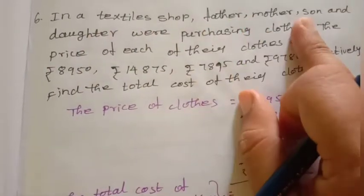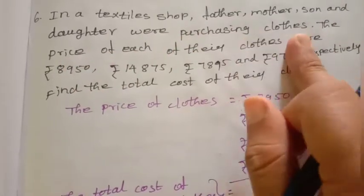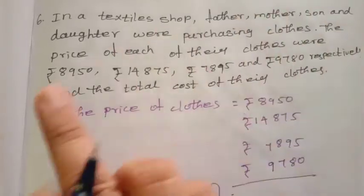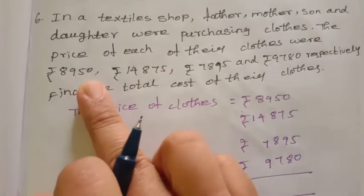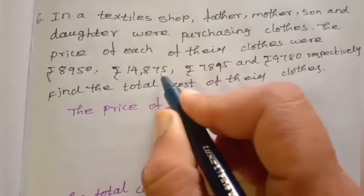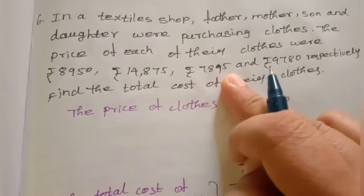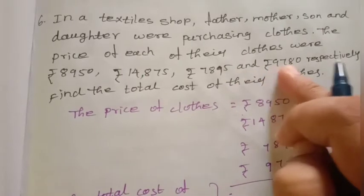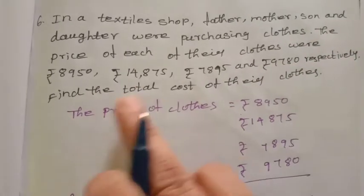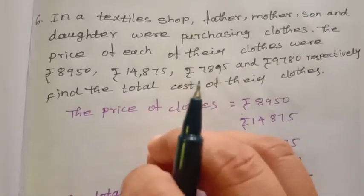In a textile shop, father, mother, son, and daughter were purchasing cloth. The price of each of their cloths were rupees 8,950; rupees 8,950; rupees 14,875; rupees 7,895; and rupees 9,780 respectively. Find the total cost of their cloth.